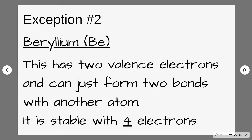The next exception is beryllium. Beryllium is in group 2 and has two valence electrons, but it can be stable when it forms just two bonds — either single bonds with two atoms, or a double bond with one atom. This means it is stable with four electrons. So when you're counting up Lewis diagrams with beryllium, you're counting up to four to make sure it's stable.